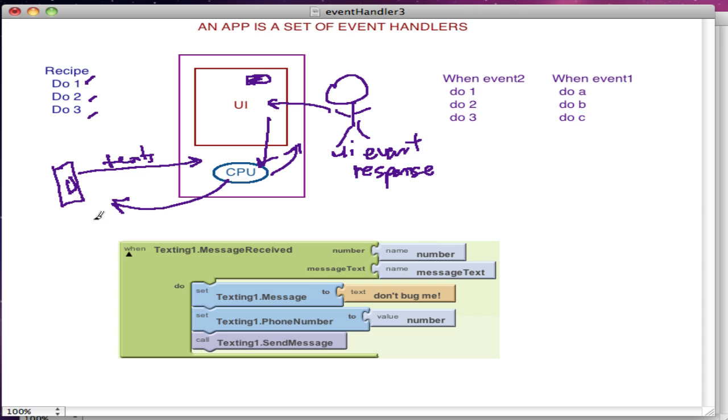We might call texting an external event. Another external event you might consider is the GPS satellite. It might send an event which is 'hey, the phone has changed location, here's the coordinates.' That's another kind of event.